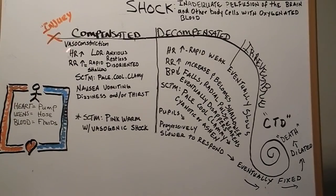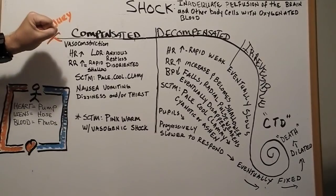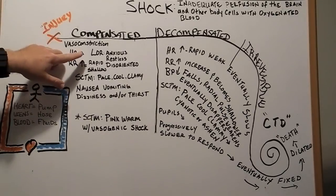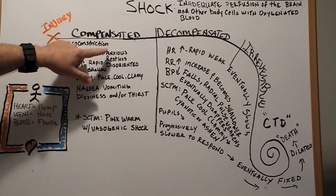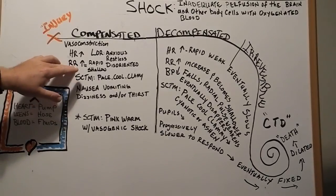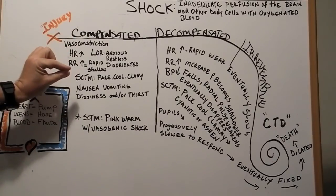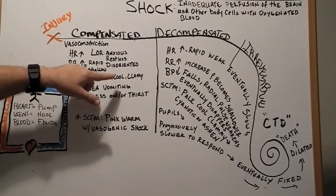As you can see on the board, we have our injury. From our injury we move into compensated shock. We get vasoconstriction — where our vessels tighten down — and they're trying to keep pressure built up in the body. Heart rate becomes elevated. Level of responsiveness, LOR, is where the patient is anxious, restless, maybe disoriented. Respiratory rate is going to be rapid and shallow — breathing really fast but taking really shallow breaths. Skin color, temperature, moisture — SCTM — we're looking at pale, cool, and clammy.